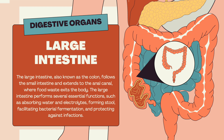The large intestine, also known as the colon, follows the small intestine and extends to the anal canal, where food waste exits the body. The large intestine performs several essential functions, such as absorbing water and electrolytes, forming stool, facilitating bacterial fermentation, and protecting against infections.